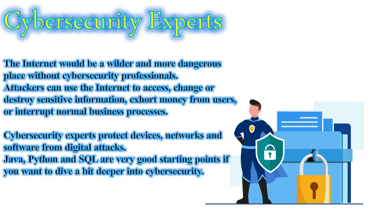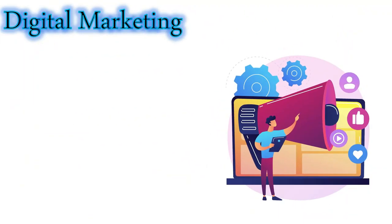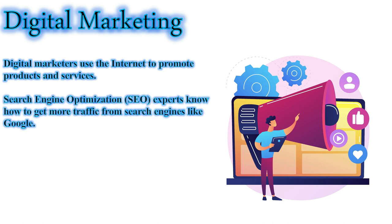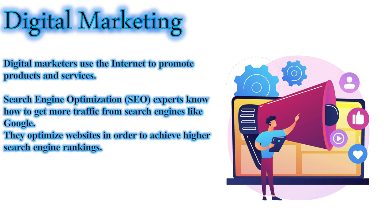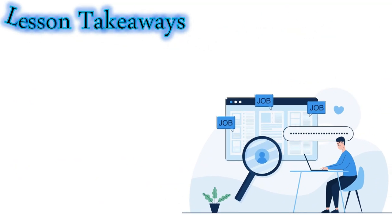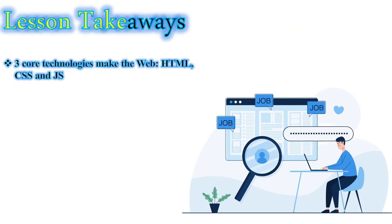Digital marketers use the internet to promote products and services. Search engine optimization (SEO) experts know how to get more traffic from search engines like Google — they optimize websites to achieve higher search engine rankings. If you want to become a digital marketer and an SEO professional, a basic understanding of HTML is a must. Lesson takeaways: the three core web technologies are HTML, CSS, and JavaScript; website tasks are classified into front-end and back-end; and coding skills give professionals a competitive advantage.